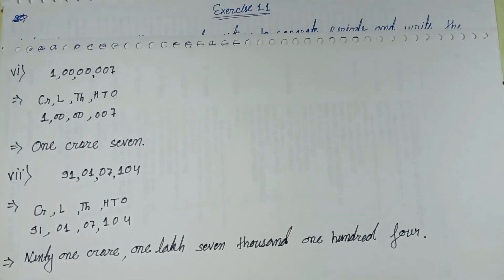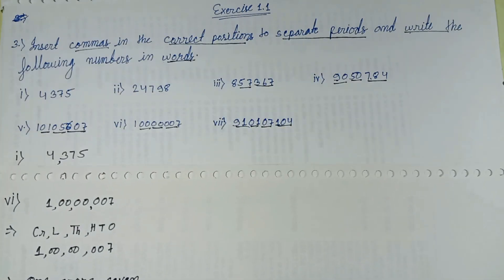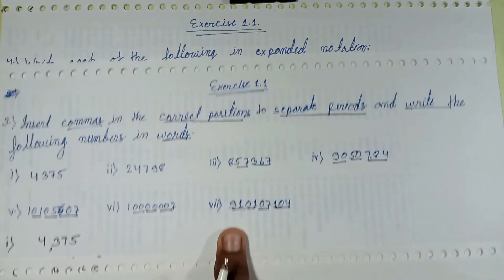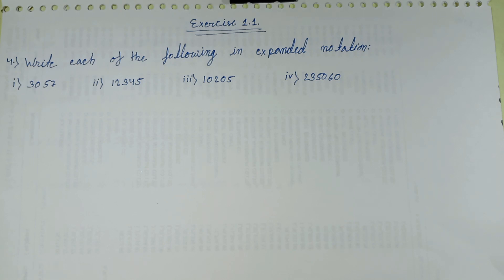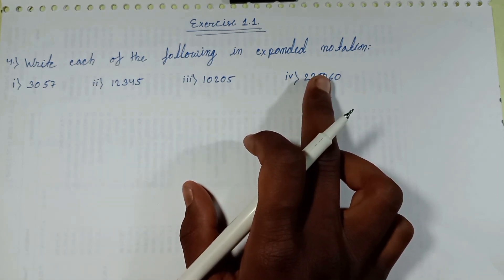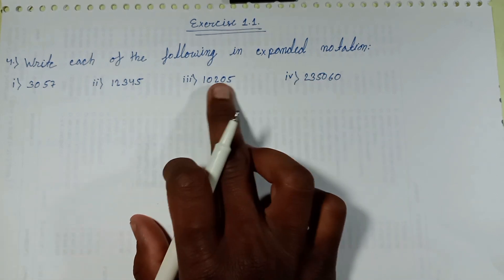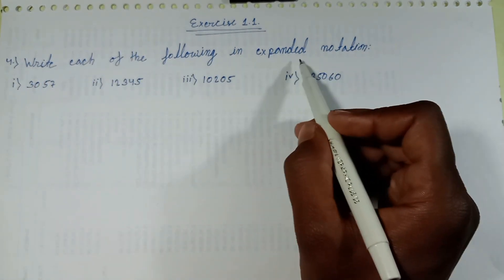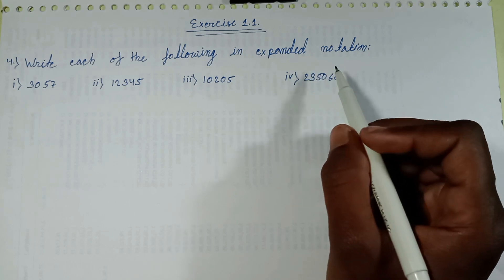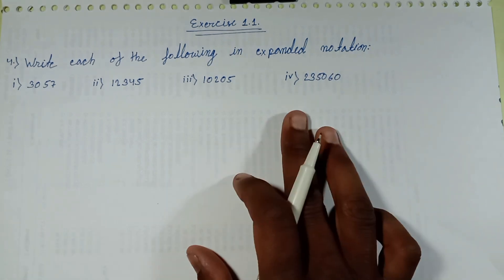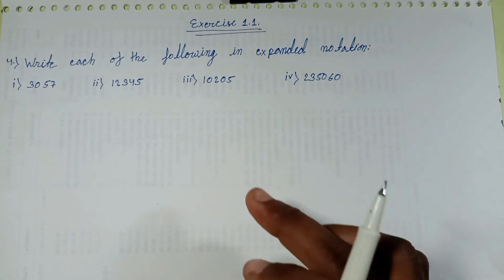Next upcoming question after Question 7 — Exercise 1.1 Question 4: write each of the following in expanded form and numeration. Write each of the following in expanded notation. This question will be solved in the next episode — link given in description.